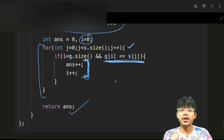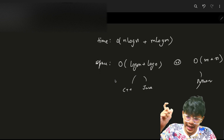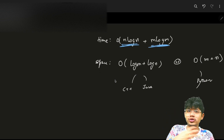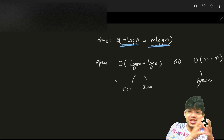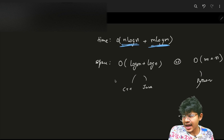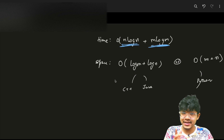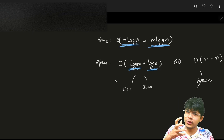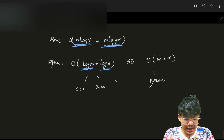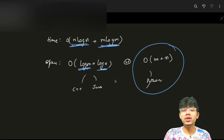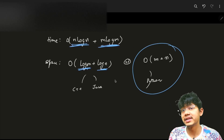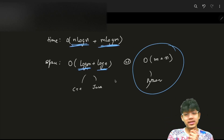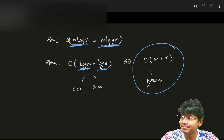Time complexity is O(n log n + m log m) because we sort both the g and s arrays. Space complexity is O(log m + log n) in C++ and Java due to sorting stack space, and O(m + n) in Python since Python's sort uses more space. That's pretty much it — thank you for watching!